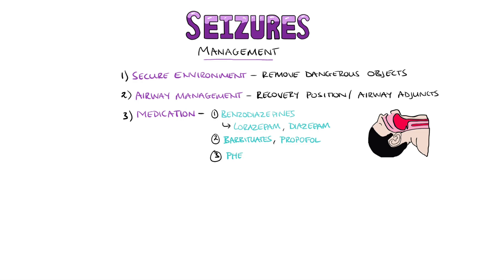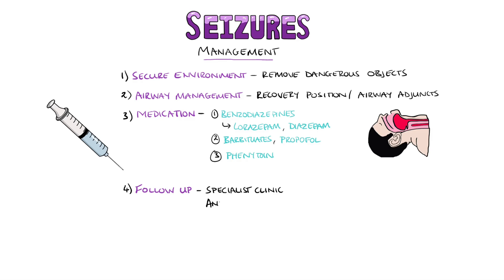Second line is phenytoin, which involves a loading dose followed by a lower maintenance dose. Patients should generally be referred to specialist clinics for follow-up, and an anti-seizure medication may be started such as sodium valproate, lamotrigine or levetiracetam.